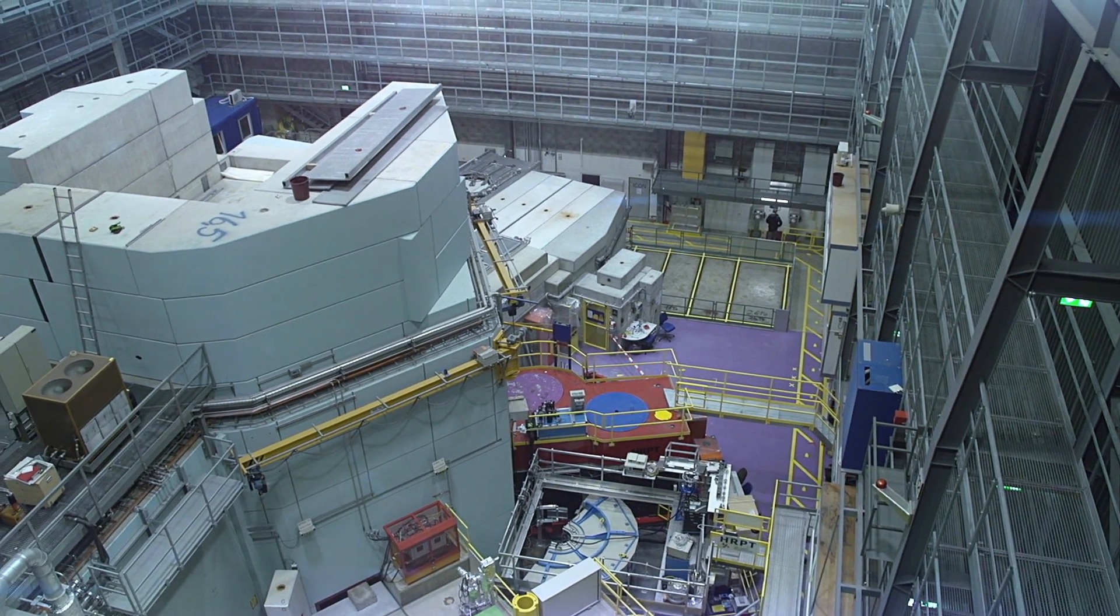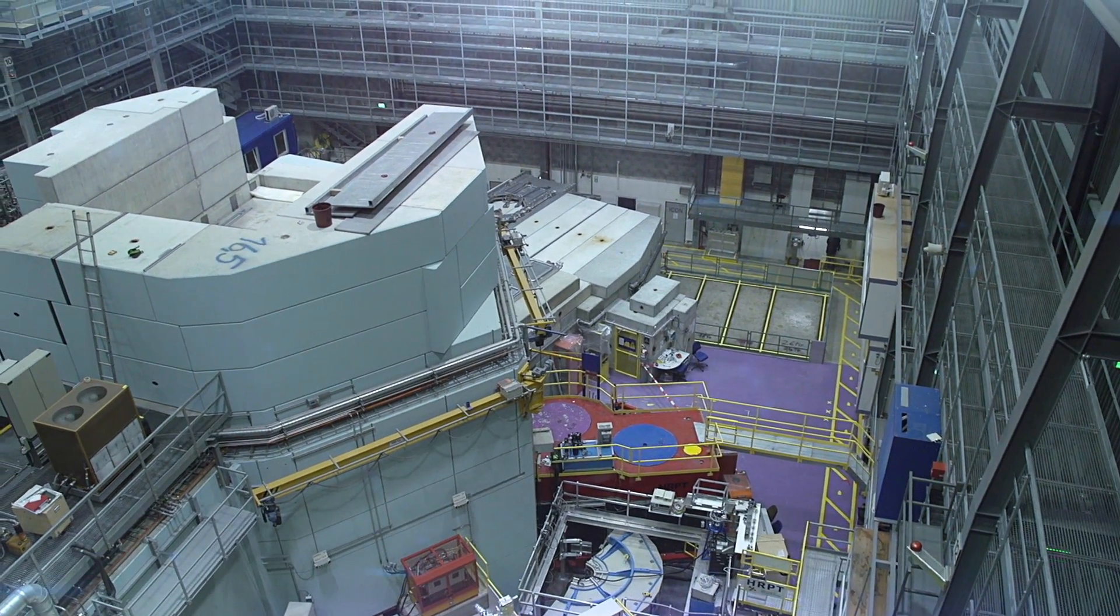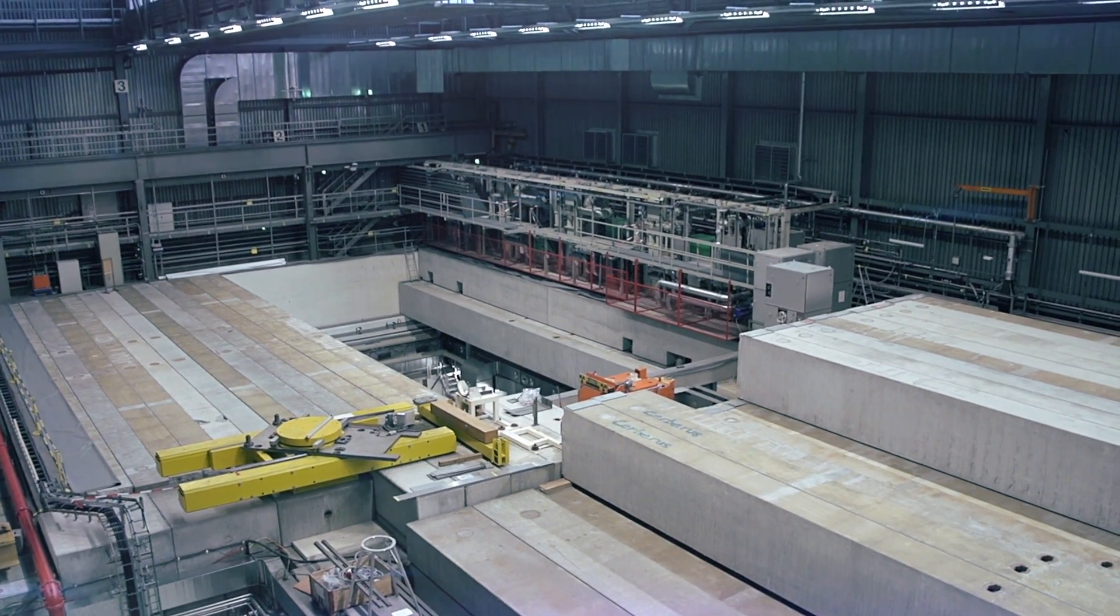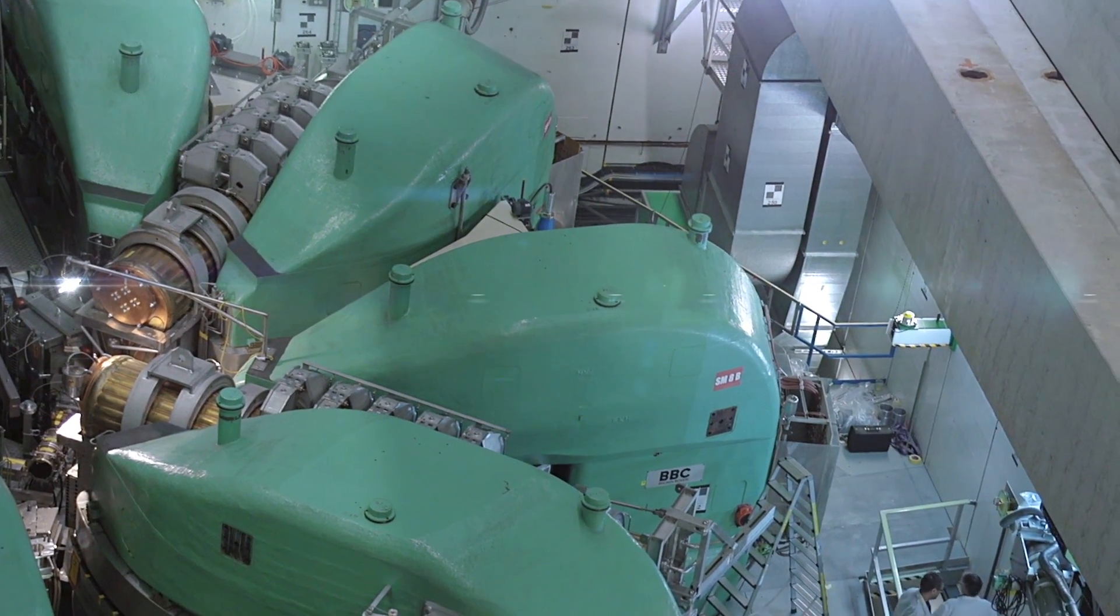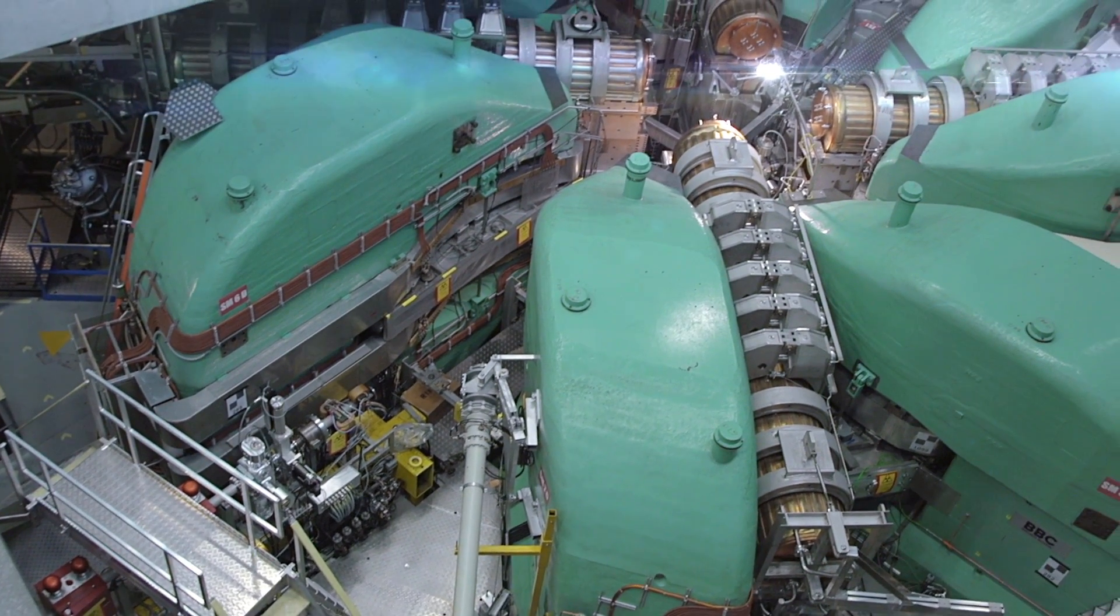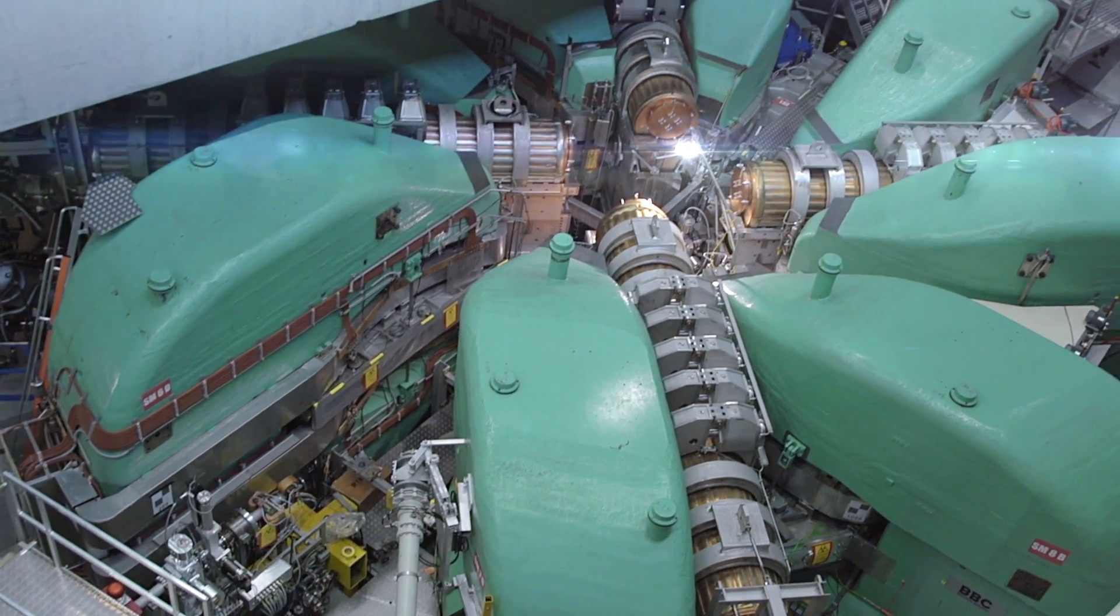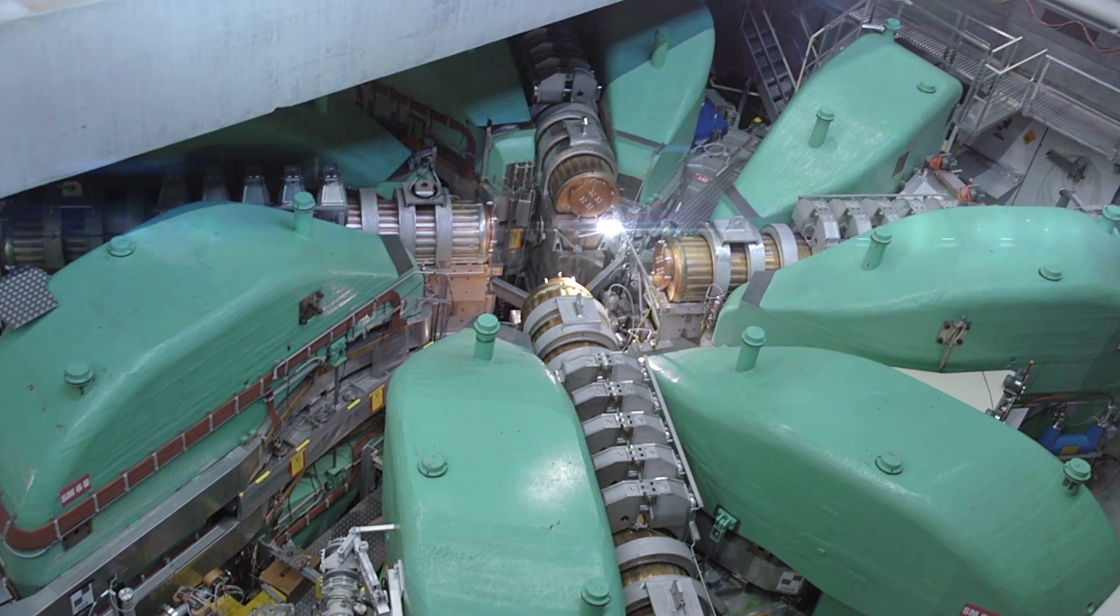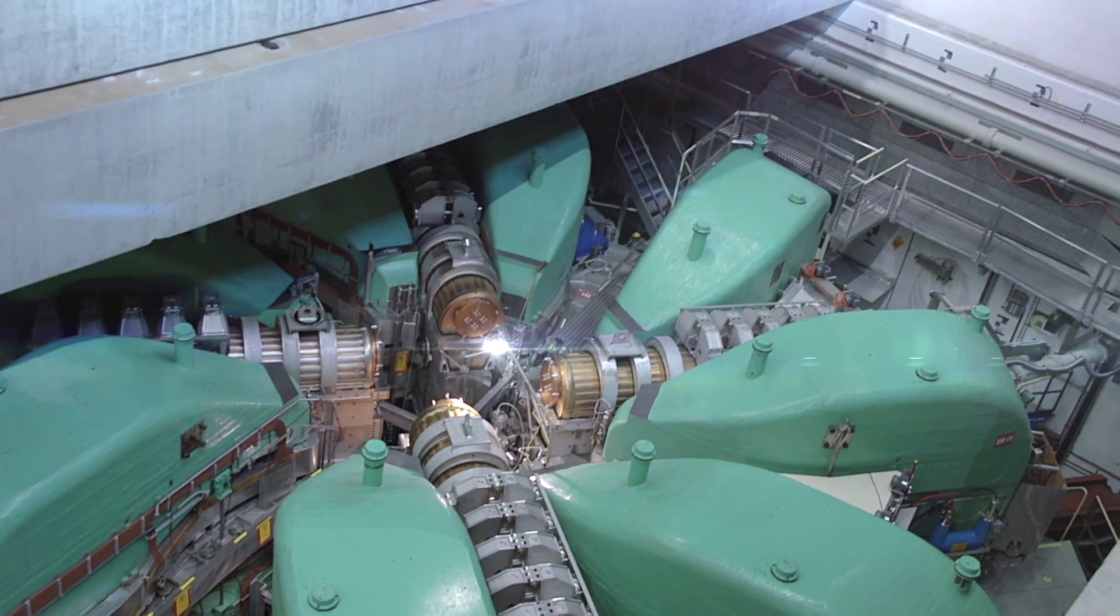Accelerators employed for testing materials under irradiation are the high-intensity proton ring cyclotron. This generates the world's highest intensities of secondary particles, such as pions and muons, but also electrons, as well as fast, thermal, cold, and ultra-cold neutrons.